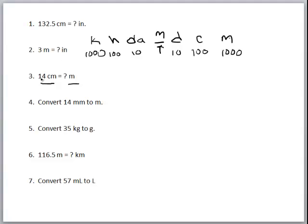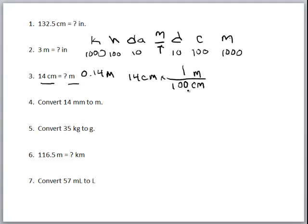Let's look at the conversions. Converting centimeters to meters is two places on the prefix scale. Going two places to the left, we simply move the decimal two places to the left, giving us 0.14 meters. Using dimensional analysis, we start with 14 centimeters. Since we're starting with centimeters, centimeters goes in the denominator. Converting to meters, we know there are 100 centimeters in a meter, so the centimeters cancel and we get 0.14 meters.